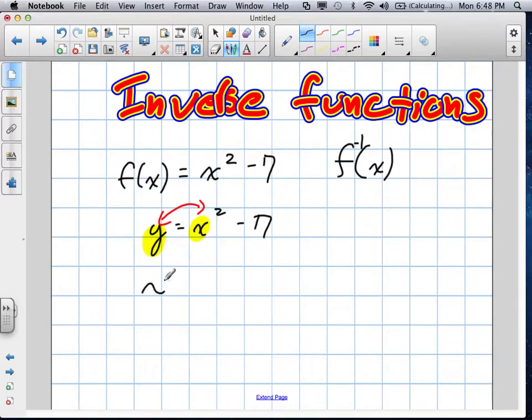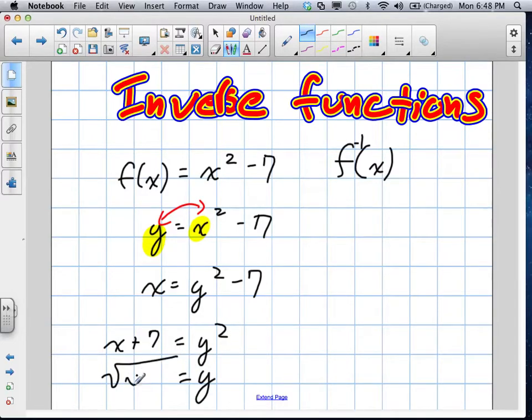So I'm now left with x equals y squared minus 7. And I've got to get y by itself. So it becomes x plus 7 equals y squared, and then y equals the square root of x plus 7. So that would be the inverse function.